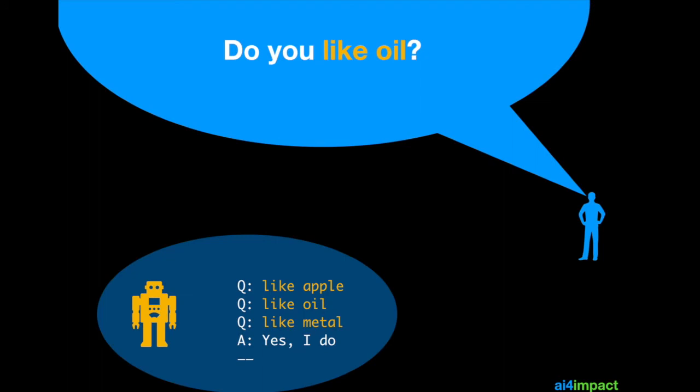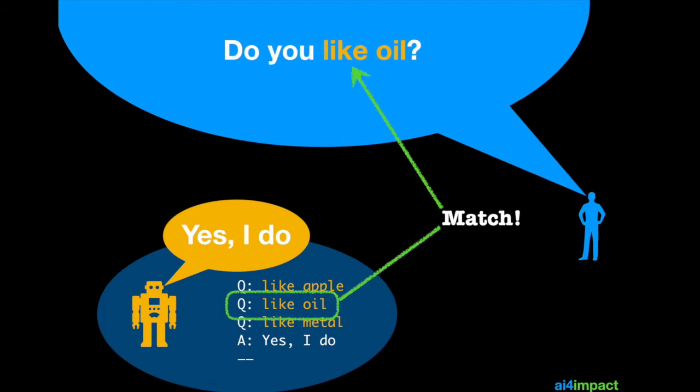Let's say your bot has one simple template. This template has got three rule matches and those are represented by the Q's and a response which is your A or your answer. So if the user has like apple or like oil or like metal anywhere in a sentence, that means that template matches. When the match is made, the A response is fed back to the user. In this case we see clearly like oil does match one of the rules in the template and so your chatbot responds with yes I do.